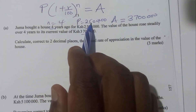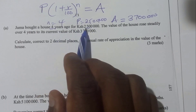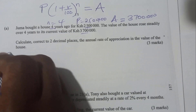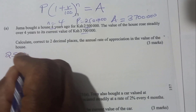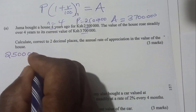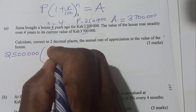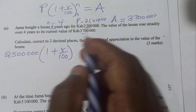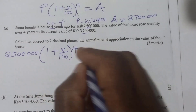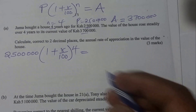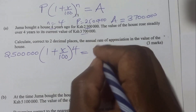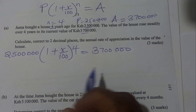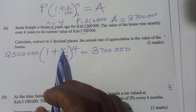So substituting: the initial amount before appreciation was 2.5 million. Then 1 plus rate over 100, then the period is 4, and the final amount was 3.7 million. That is what you're going to use to get the rate — we need to calculate R.